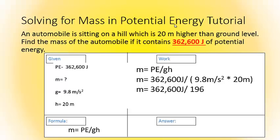Now, we are going to take 362,600 joules and divide it by 196. This will get us 1,850. So, we pull that down into our answer box and attach our unit, the kilogram.